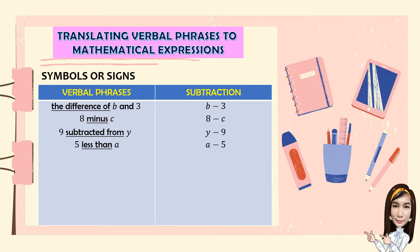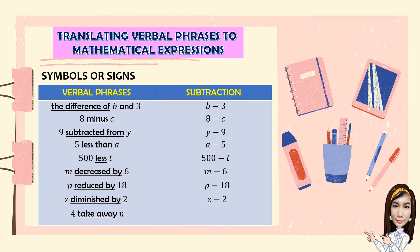500 less T, 500 minus T. M decreased by 6, M minus 6. P reduced by 18, P minus 18. Z diminished by 2, Z minus 2. 4 take away N, 4 minus N.